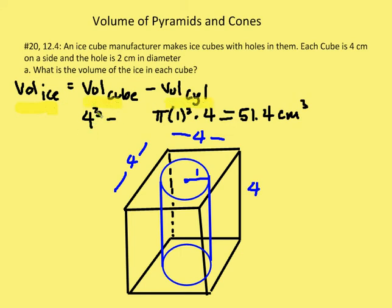The volume of the cube is 4 cubed. The volume of the cylinder is pi r squared times h — pi times 1 squared times 4, which is the height. So the base area times the height gives us the cylinder volume. The final answer is 51.4 cubic centimeters.